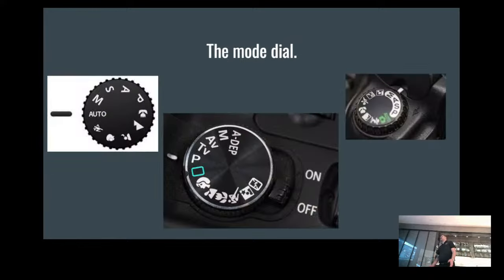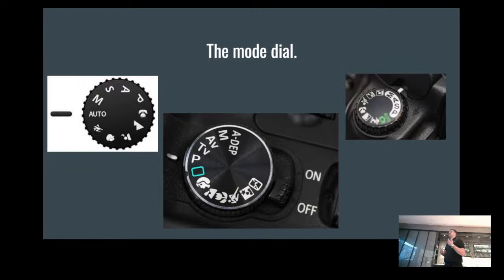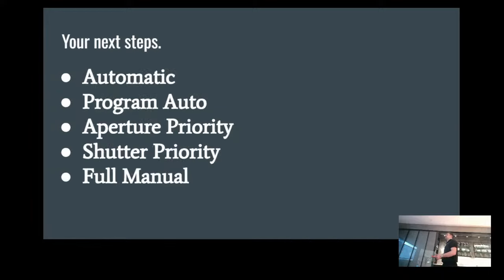We talked about the mode dial last week and ended on automatic. But let's refresh before we jump into the different modes. All three of these mode dials look a little different, and this is where it's important to see what camera you have exactly. You've got settings that can be functional to you — automatic, program automatic, aperture priority, shutter priority, and full manual.